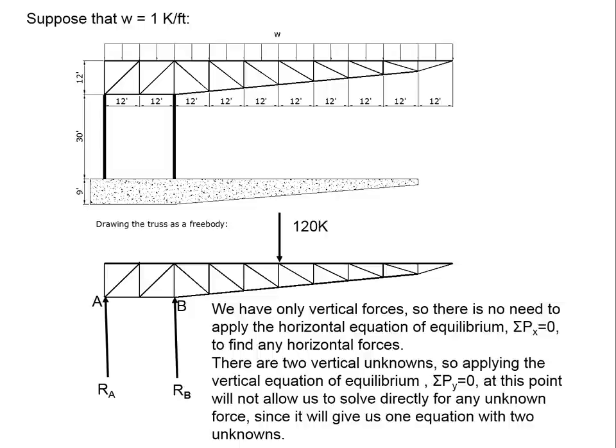So we have only vertical forces. We have no horizontal forces, so there's no need to apply the horizontal equation of equilibrium, which is the sum of the Px equals zero, to find any horizontal forces. At this point, there's also no need to apply the sum of the verticals, because we have two unknowns, R B and R A, and we'll get one equation with two unknowns, which won't allow us to solve for anything directly.